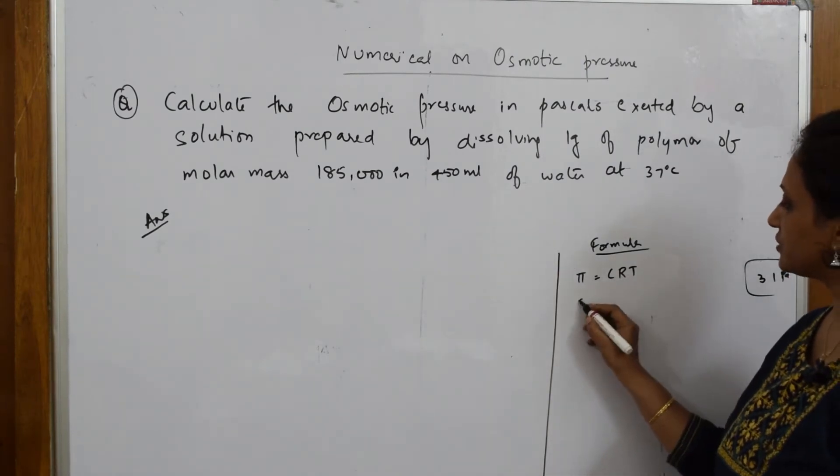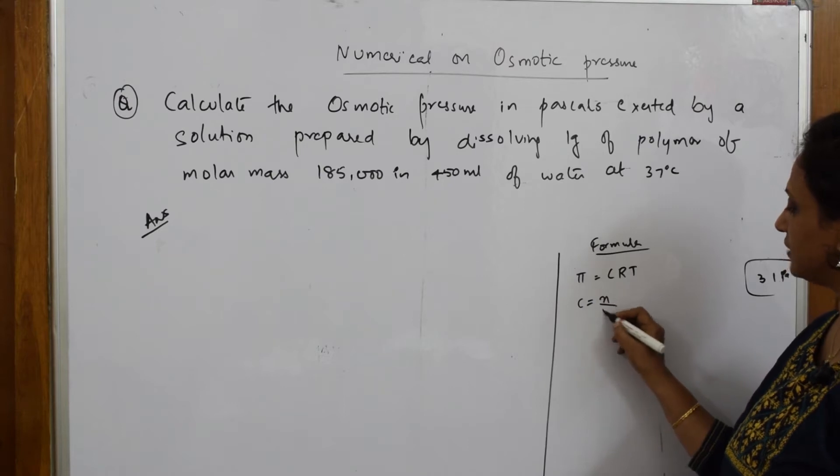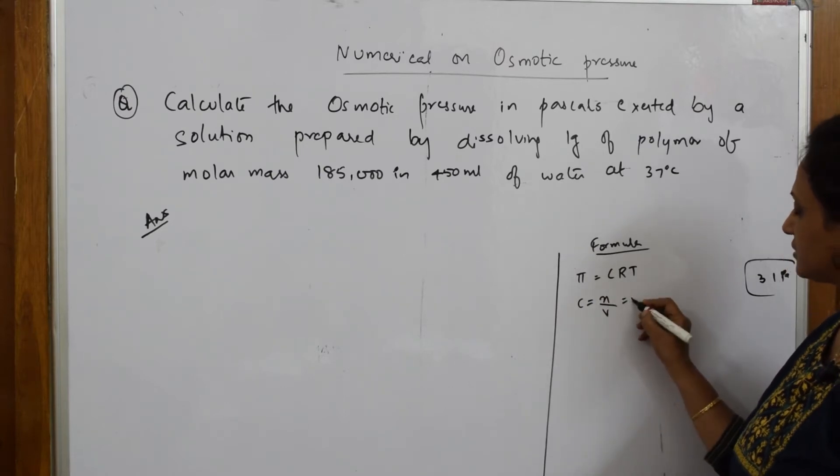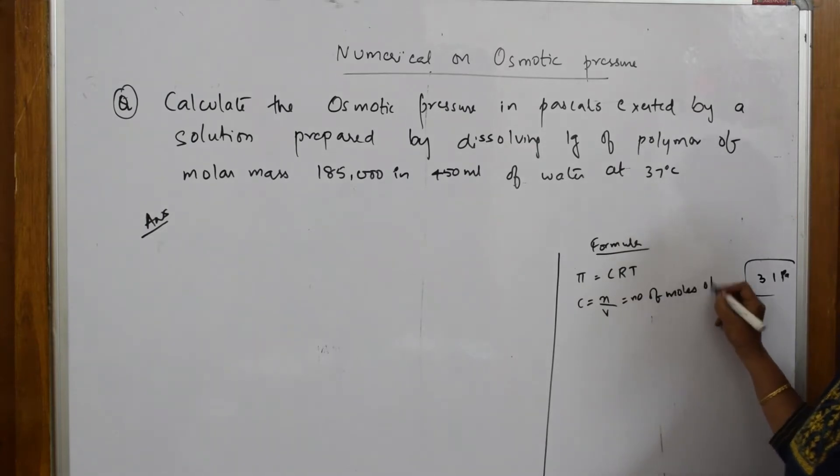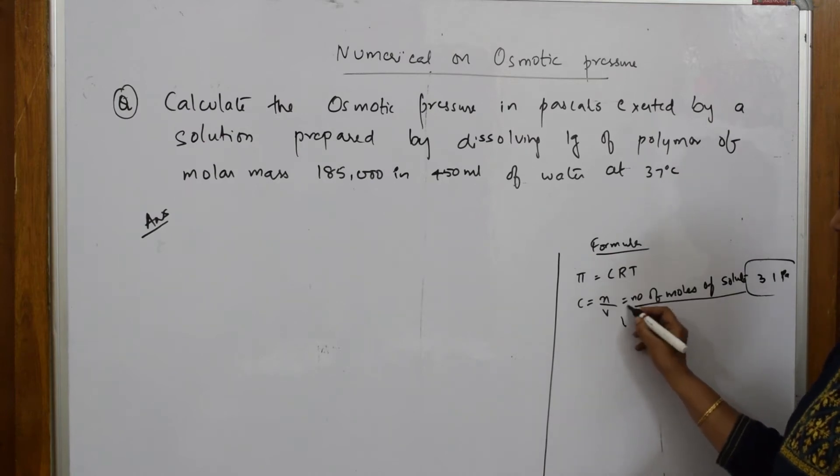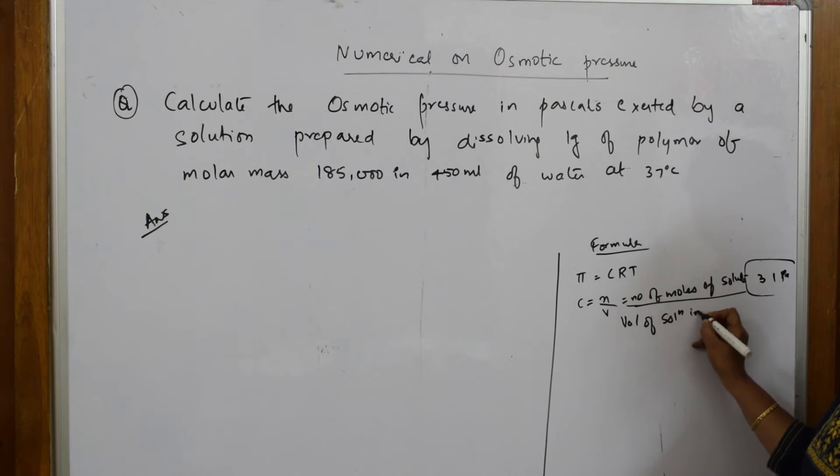We very well know concentration C is equal to N by V. Now, what is this N? N is equal to number of moles of solute divided by V stands for volume of solution in liters. This is what we have studied, volume of solution in liters.